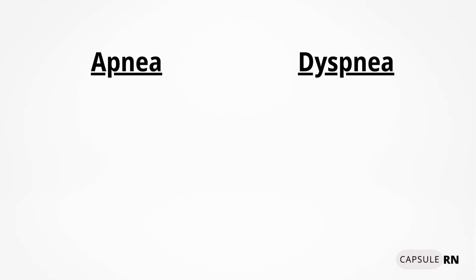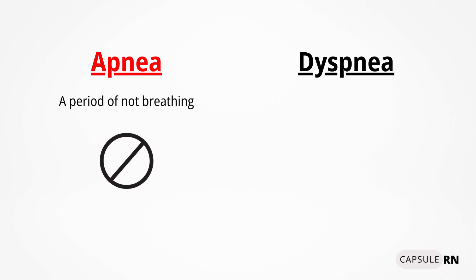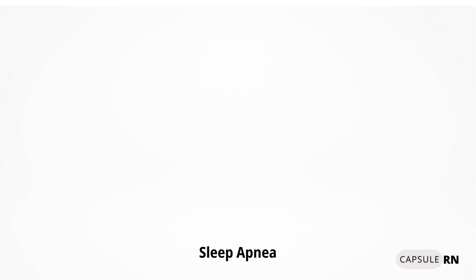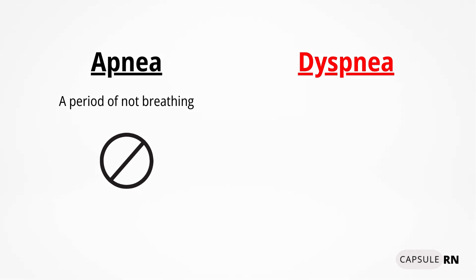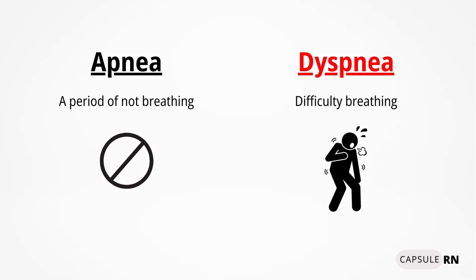There are two other key respiratory terms you need to know that are not normal findings. The first is apnea — a period of not breathing. You may have heard this term connected with the condition called sleep apnea, where a patient who is sleeping will have periods when they stop breathing and then start back again. The second term is dyspnea. Dyspnea is a shortness of breath or difficulty breathing. If your patient is struggling and laboring for each breath, they have dyspnea.